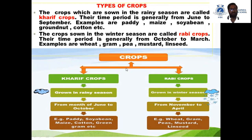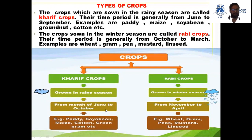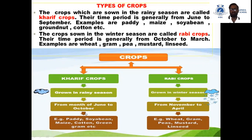The difference between Kharif crops and Rabi crops: Kharif crops are grown in the rainy season and Rabi crops are grown in the winter season. The time period for Kharif crops is June to October/November, and for Rabi crops from November to April. Examples of Kharif crops are paddy, soya bean, maize, cotton, etc., and for Rabi crops: wheat, gram, pea, mustard, linseed, etc.